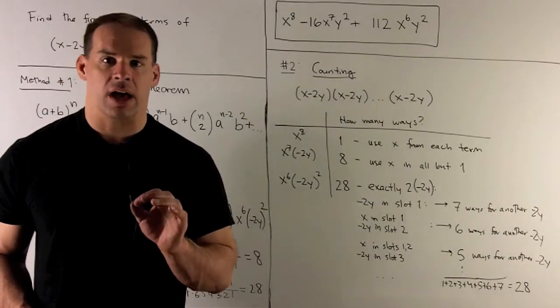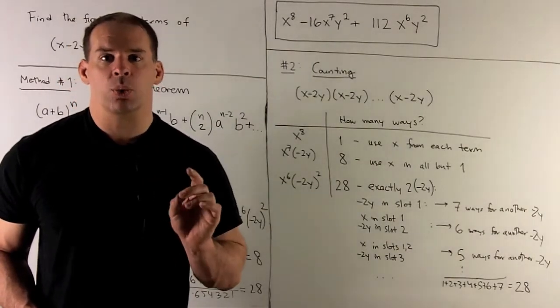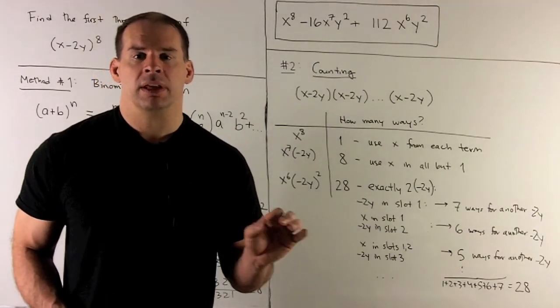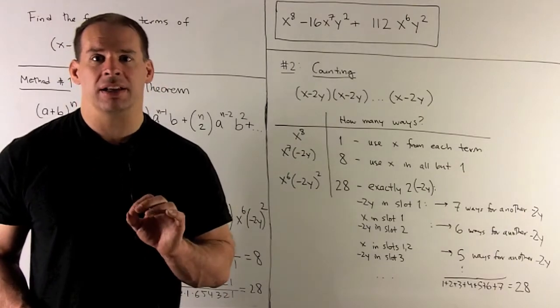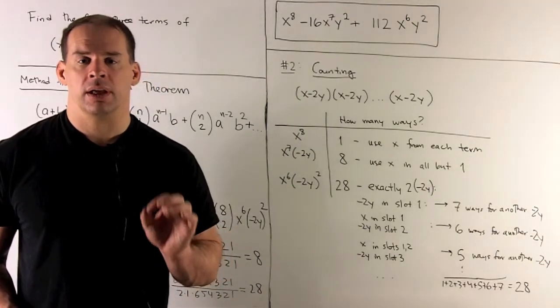Another method, counting. Let's take (x - 2y), multiply it by itself 8 times. Then, instead of taking the full expansion, we just want to be clever about counting to pick off the three terms that we want.